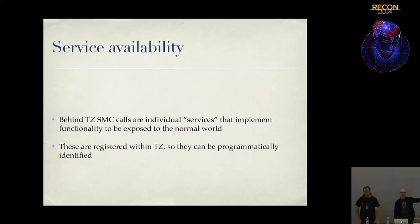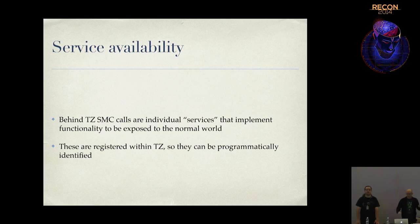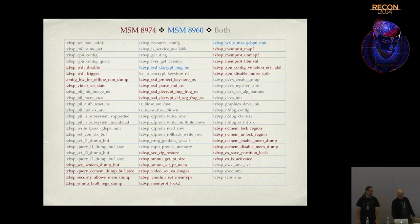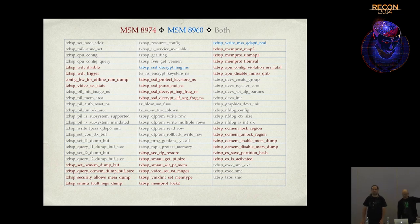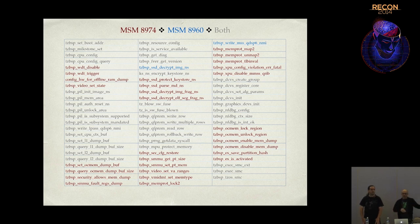What I'm actually invoking are things called services. Each service implements some sort of functionality to the outside world. You can programmatically look these up. Here's a list - you don't need to read it closely, but the colors distinguish what's common to both versions, what's new in 89.74, and what went away in 89.60.